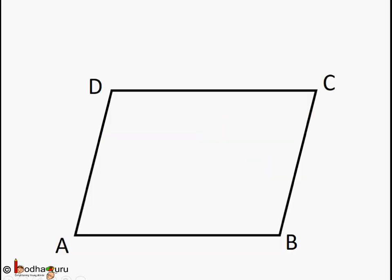Hello friends. Diagonals of parallelograms have special characteristics. They bisect each other. In geometry we use this property very often. Let us prove it now.